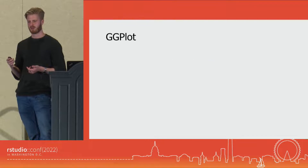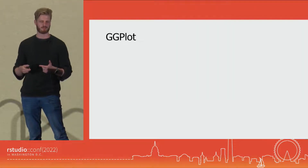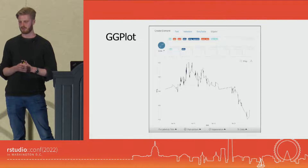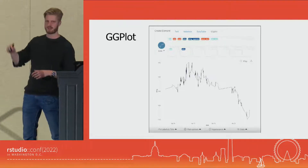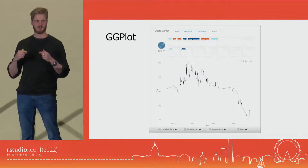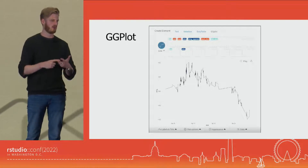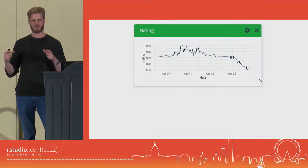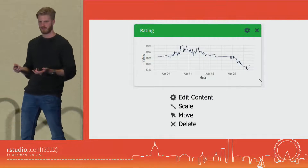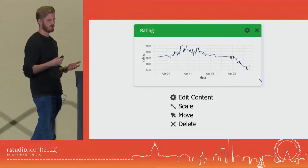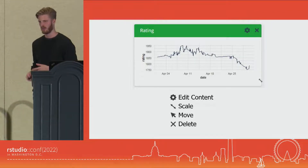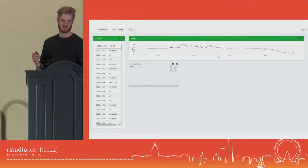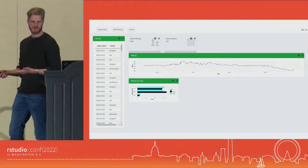But how are we going to create ggplots and graphs without writing code? Thankfully, the guys from Dreamers have the awesome esquisse package. You can see all your columns from your data at the top, and then you can drag and drop these columns into the X, the Y, maybe the color — and it creates a graph for you. Once you have this element, you can edit the content, scale it, move it around, and delete it. Then you just repeat these steps: add an element, scale it, add an element, scale it, add more, move them around — and you build your dashboard.